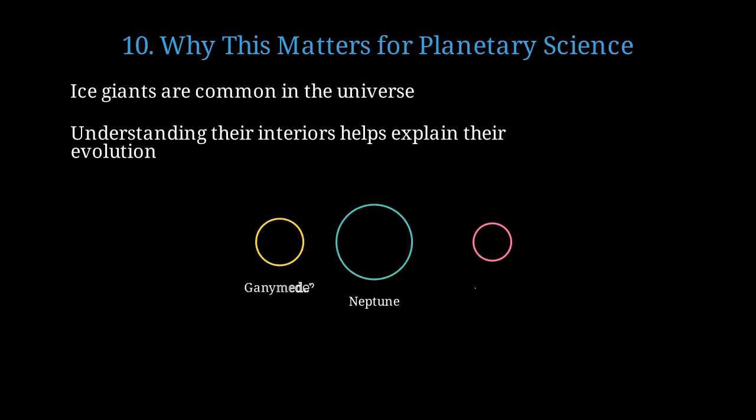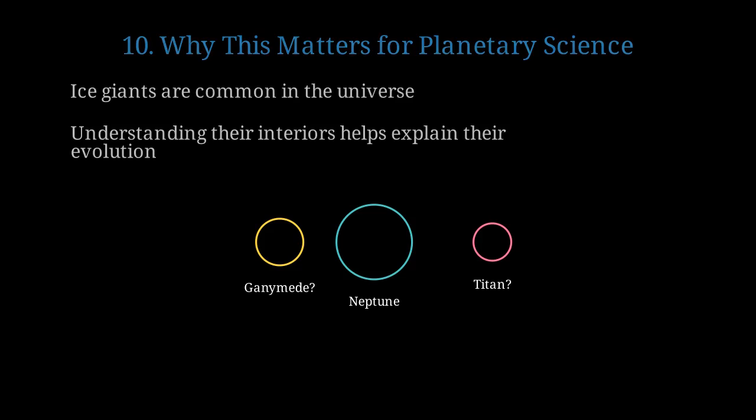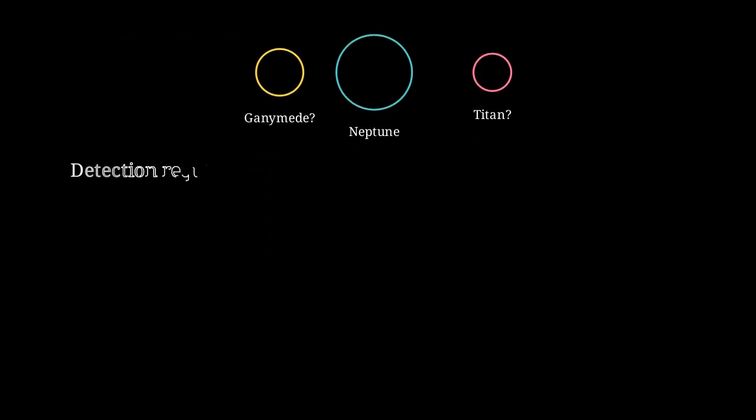Neptune definitely contains superionic ice, while large moons like Ganymede and Titan might have small regions where it could exist. Detecting it would require detailed seismic studies or analysis of magnetic field anomalies from these bodies.